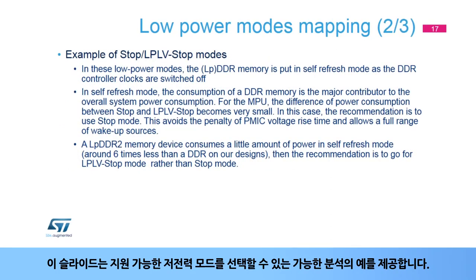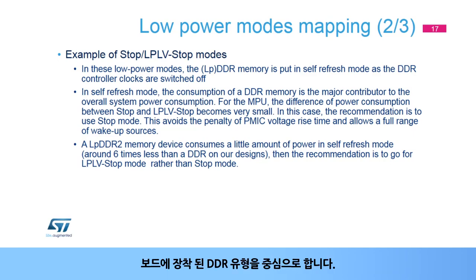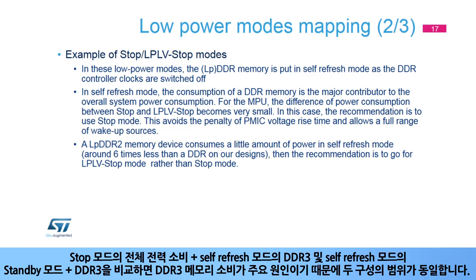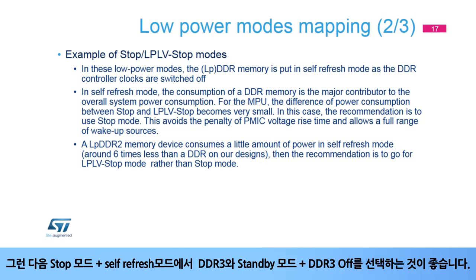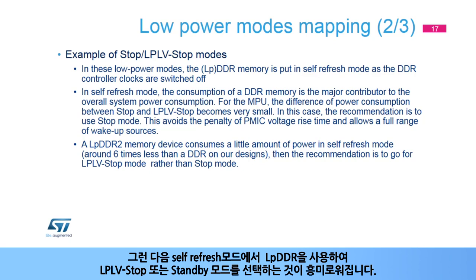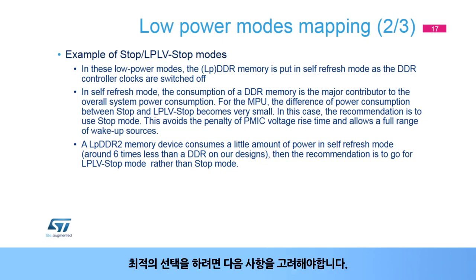This slide gives an example of the analysis enabling the choice of low power modes, oriented around the DDR type mounted on the board. In low power mode, the DDR memory is put in self-refresh. Comparing the overall power consumption in Stop mode plus DDR3 self-refresh versus Standby mode plus DDR3 self-refresh, both are in the same range because DDR3 memory consumption is the major contributor — so it makes sense to choose Stop mode plus DDR3 self-refresh, and Standby plus DDR3 off. With LPDDR2, the conclusion is different because LPDDR2 self-refresh consumption is small, making LPLV-Stop or Standby mode with LPDDR in self-refresh more interesting. Remember that the optimal choice requires consideration of wake-up latency, targeted power saving gain, and the type of needed wake-up source.